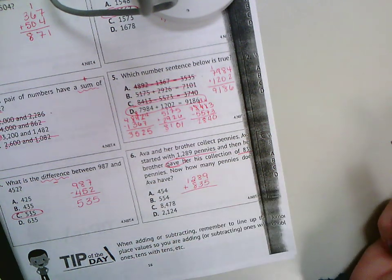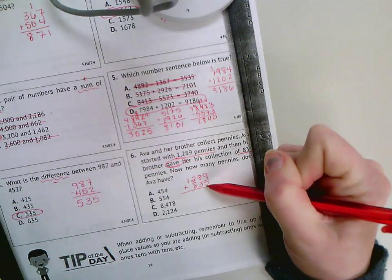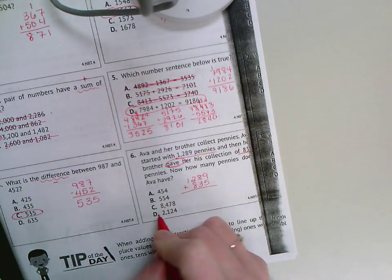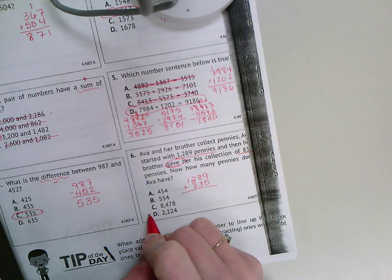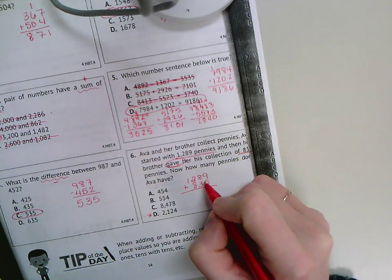And even before I add, I'm going to see that this is about 1,000 and this is about 1,000, and only one of these answers is close to that. So I'm going to guess my answer is D and double check just to make sure.